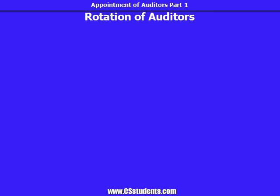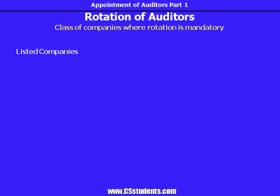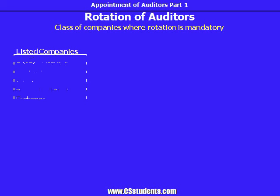Let's understand the criteria of companies wherein mandatory rotation of auditor is required. First criteria is listed companies. So listed companies are mandatorily required to change their auditor after a particular time period. The term 'Listed Company' is defined under subsection 52 of Section 2 of the New Companies Act. As per that definition, a listed company means a company which has any of its securities listed on any recognized stock exchange. Therefore, if a private company has got its privately placed debentures listed, it shall classify as a listed company and will have to comply with the rotation of auditors.